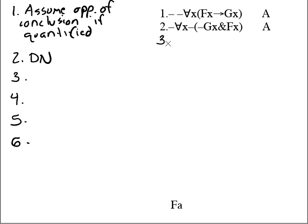Clearly on line 1 we do. We have two dashes in front of our quantifier and what we want to do is get this out of the way. Therefore we're going to write for all x fx arrow gx and that's going to be 1 double negation.